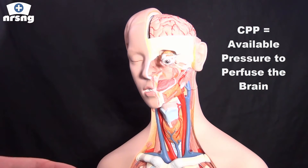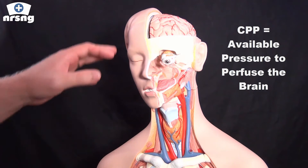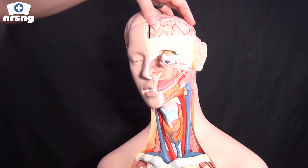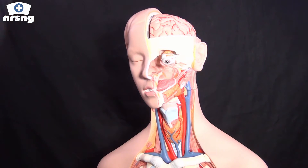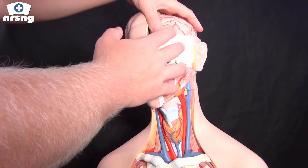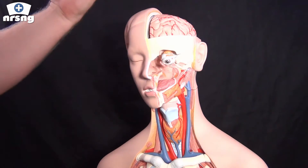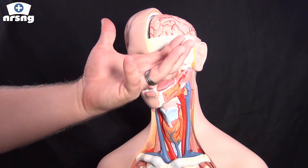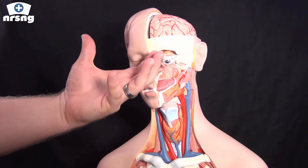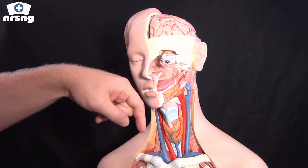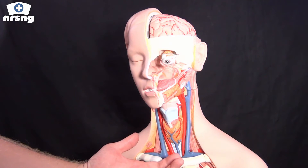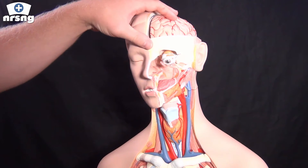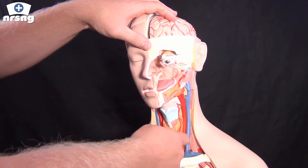We need to keep CPP above about 70. If it goes below 70 for a sustained period of time, we're going to suffer ischemic brain injuries. So if we have a stroke or swelling in the brain, that's going to cause ICP to go up. If our ICP is at 20 and our MAP does not accommodate and rise as well, then our Cerebral Perfusion Pressure is going to go down. Think of MAP as the systemic pressure throughout the entire body, and ICP as what MAP has to fight against in order to get blood up to the brain.